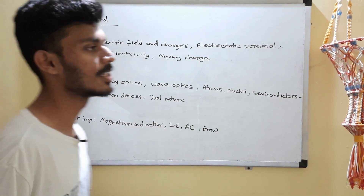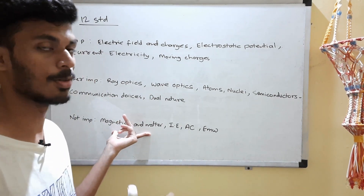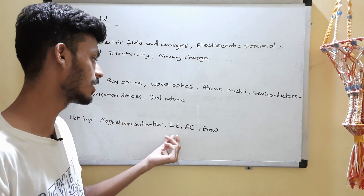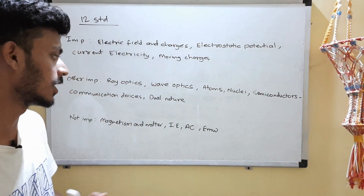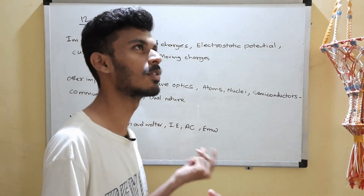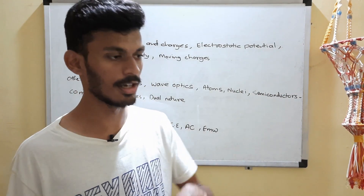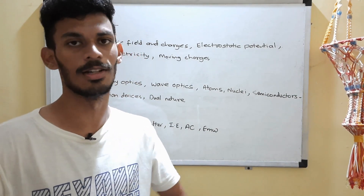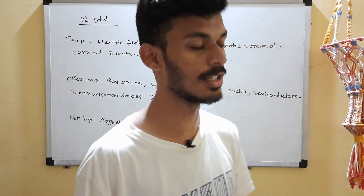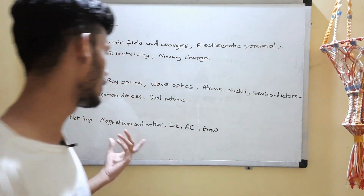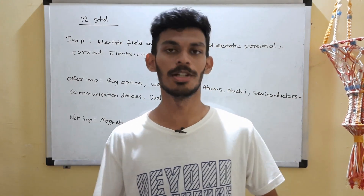Finally, the not important category for 12th standard — you may skip these chapters but I wouldn't recommend it. Magnetism and matter questions are asked very occasionally and are often theory-based. Electromagnetic induction yields only about one question over two years, and the famous questions are from motional EMF only. AC circuits also follow an alternating pattern — asked one year, not the next. Electromagnetic waves is similarly very occasional, much like magnetism and matter.